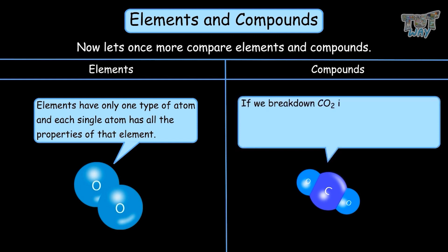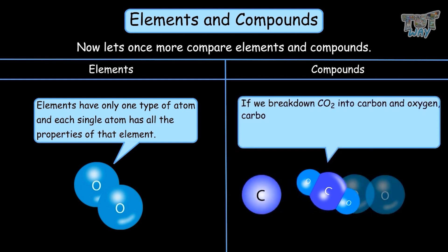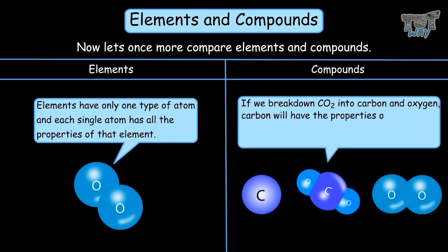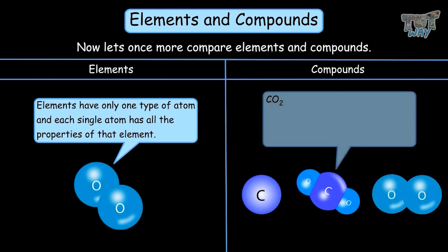If we break down CO2 into carbon and oxygen, carbon will have the properties of the element carbon and oxygen will have the properties of the element oxygen. This molecule will not remain a molecule of carbon dioxide.